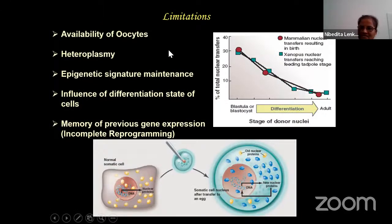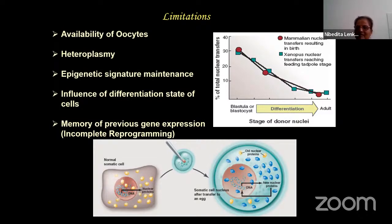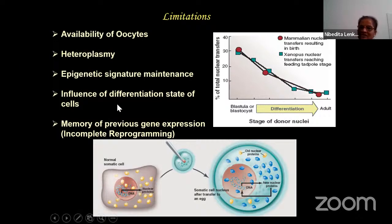Some drawbacks of SCNT include limited availability of oocytes and heteroplasmy - since the oocyte contains mitochondrial DNA, when you fuse the donor nucleus with the enucleated oocyte, you get mitochondrial DNA from both donor and recipient. Newer technologies are trying to address this. Another drawback is epigenetic signature maintenance - during development, there are many epigenetic processes such as methylation and acetylation that need to be maintained. When doing SCNT with a somatic cell from a donor, the signature maintenance becomes problematic.